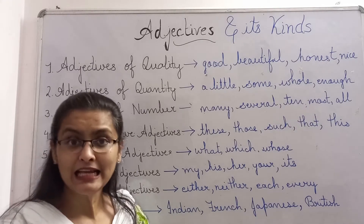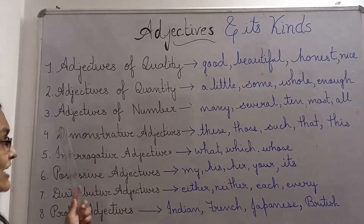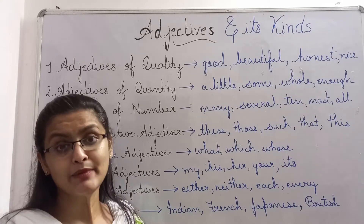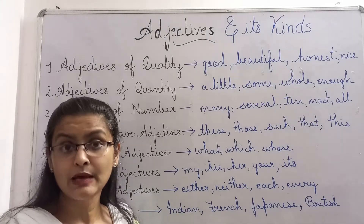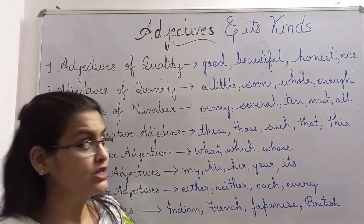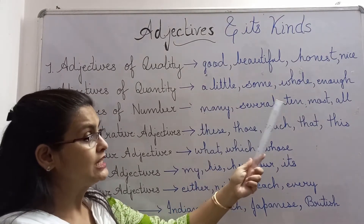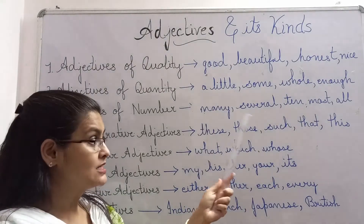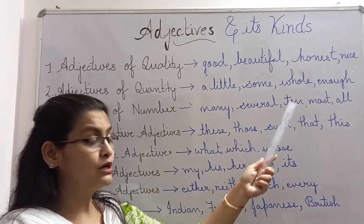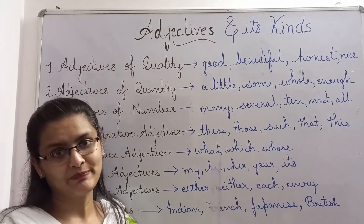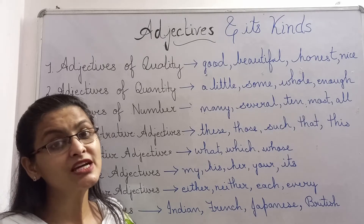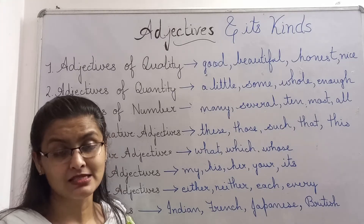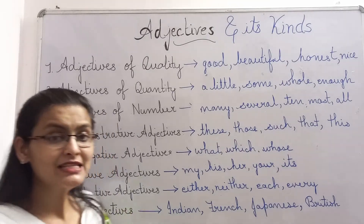Let us see the third type: adjectives of number. This kind of adjective tells us the number of persons, places, animals, or things. For example: many, several, ten, most, all. Many pens, several books, ten men, most men, all books. These words are speaking about the number of persons, places, animals, or things.